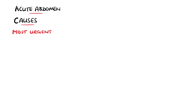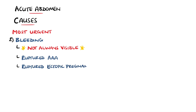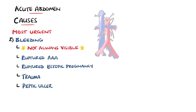Acute abdomen generated by a bleed is also an emergency. Bleeding must be kept in the differential, as it may be overlooked since the bleeding is not visible externally in many cases. Examples include the rupture of an abdominal aortic aneurysm, a ruptured ectopic pregnancy, trauma, or a bleeding peptic ulcer. These patients will often require immediate surgical intervention.